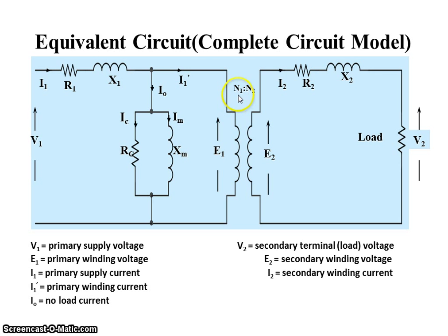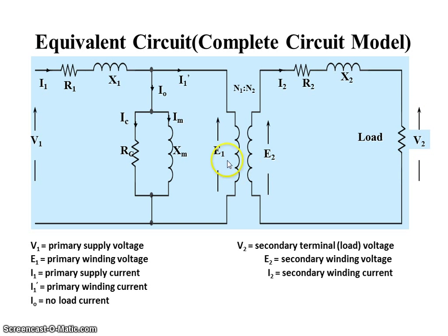RC is the core loss resistance and XM is the magnetizing reactance. The ratio between the primary and secondary is N1 to N2. I2 is the secondary current. R2 and X2 are the secondary resistance and secondary reactance. V2 is the secondary terminal voltage. E1 is the primary induced EMF and E2 is the secondary induced EMF. This is the complete circuit model of the single phase transformer.